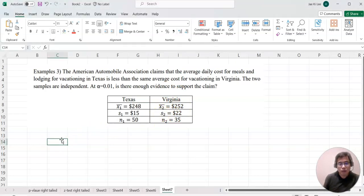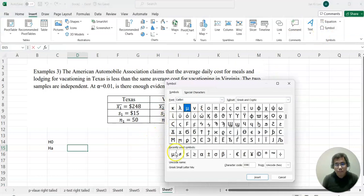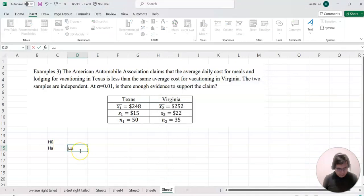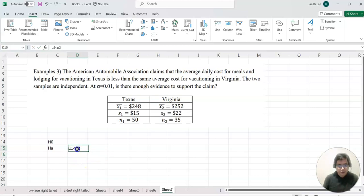Based on this, we can set up the hypothesis testing. H0 and HA. When I read these sentences here, vacationing in Texas is less than the same average cost for vacation in Virginia, so we can say μ1 is less than μ2.